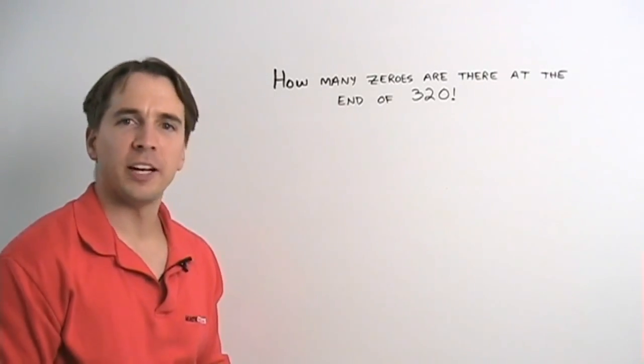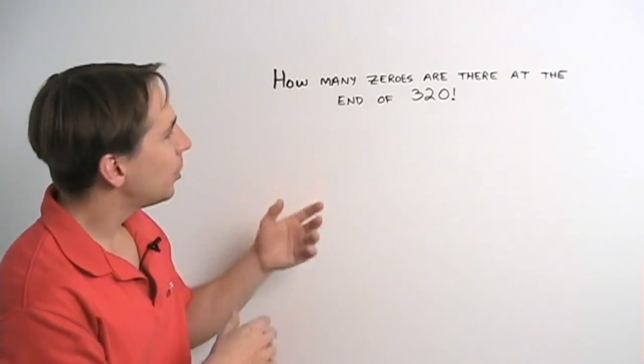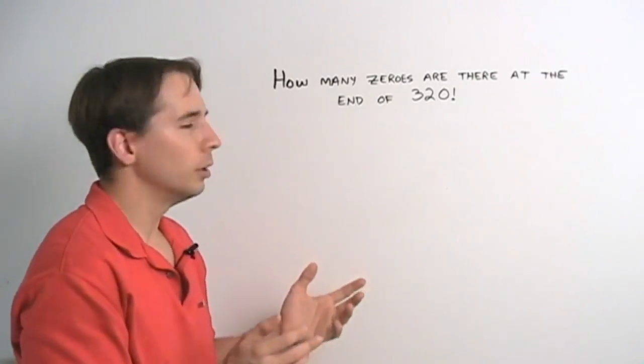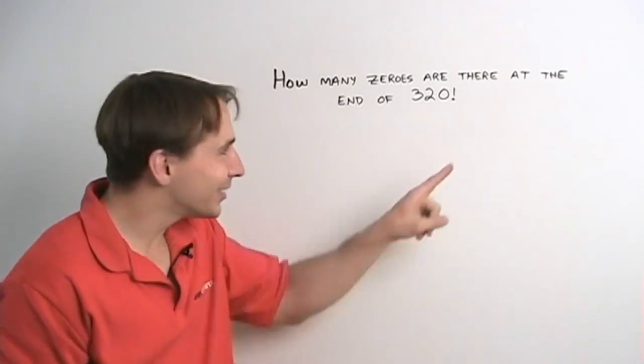Now, if you didn't know anything about factorials, you'd take a look at this problem and you'd go, how many zeros are there at the end of 320? Well, that's easy. There's just one. It's right there. I found it.